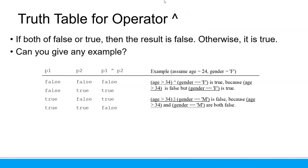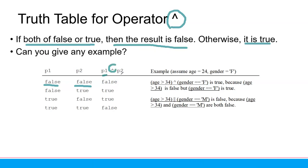Exclusive OR (XOR, ^): if both are false or both are true, the result is false. Otherwise it is true. So P1 false, P2 false — XOR is false. P1 true, P2 true — XOR is false. If one is true and the other is false, then the result is true.